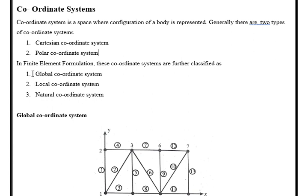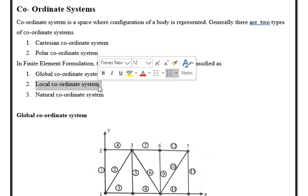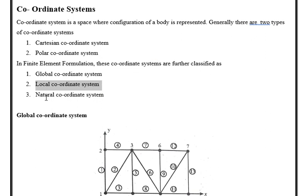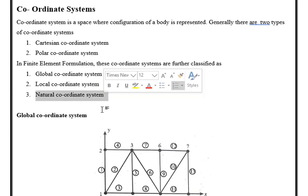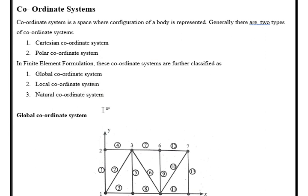In FE formulation, we use three types of coordinate systems: one is the global coordinate system, another is the local coordinate system, and the third is the natural coordinate system.